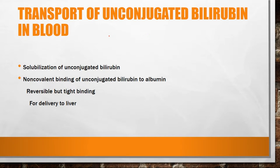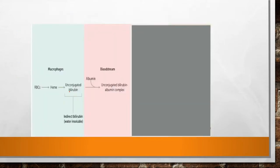In the transport of unconjugated bilirubin in blood, unconjugated bilirubin is bound to albumin by non-covalent bonding, which is reversible because it has to be delivered to the liver. Here we have formed the unconjugated bilirubin-albumin complex in the blood, which is then taken into the liver.